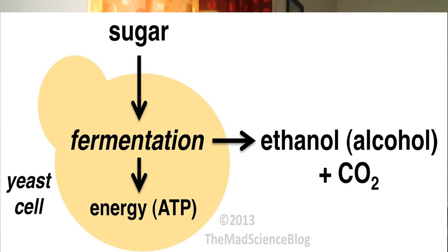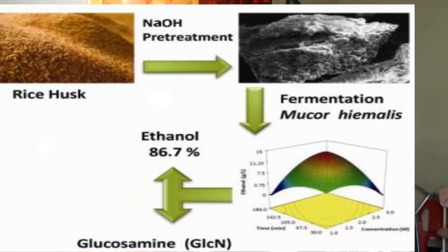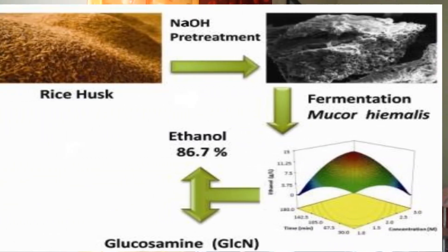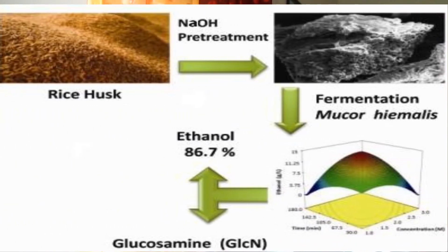Ethanol can therefore build up in the tissues. Ethanol is toxic, but the cells in rice roots can tolerate much higher levels of it than most plants.